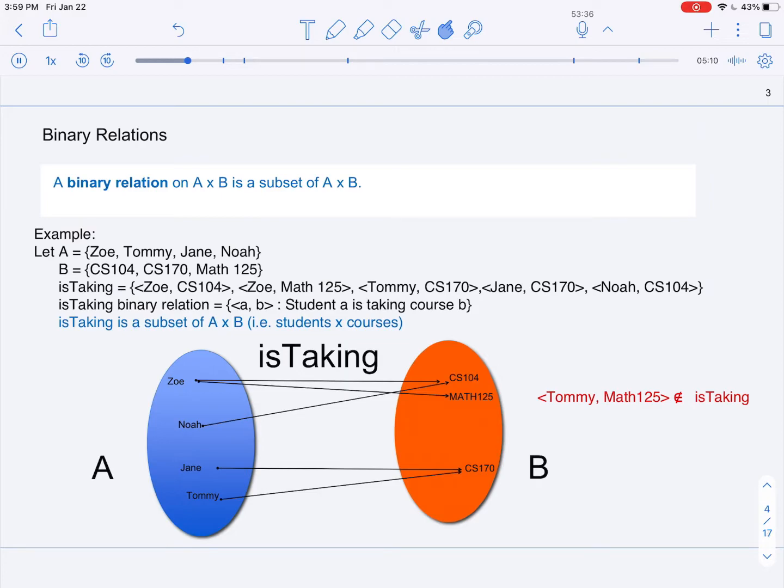Jane, CS-170, to indicate Jane is taking 170. And Noah, CS-104, to indicate that Noah is taking 104. You can see that those ordered pairs come from the cross product of A and B.